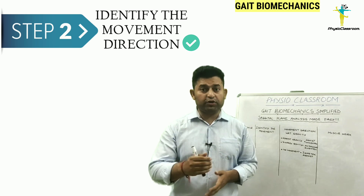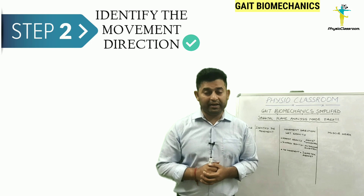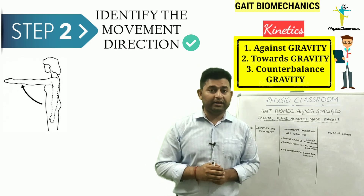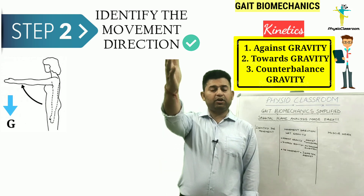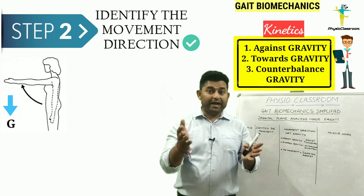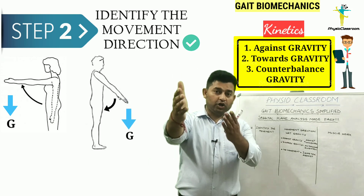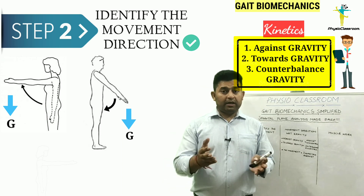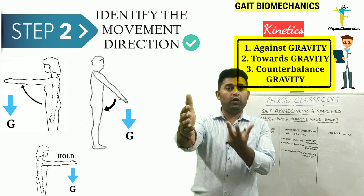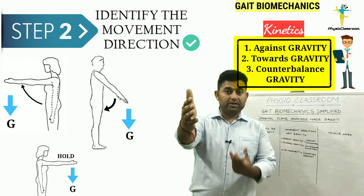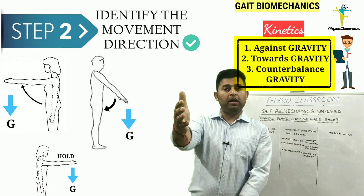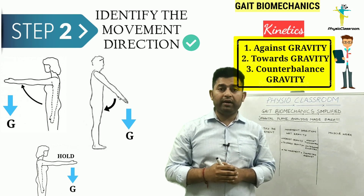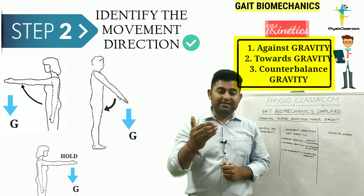The second step in learning biomechanics is to identify the direction of motion with respect to gravity. There are three options: first, the movement is taking place against the direction of gravitational pull; second, the movement is taking place towards the direction of gravitational pull; and third, the joint has stabilized itself at a particular location and no movement is taking place, so the gravitational pull has been counteracted. Depending on these three situations, we perform our kinetic analysis.